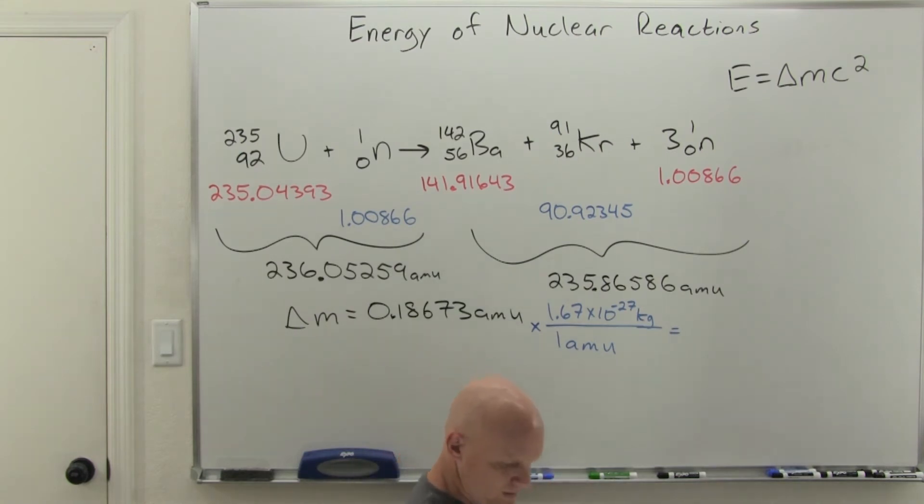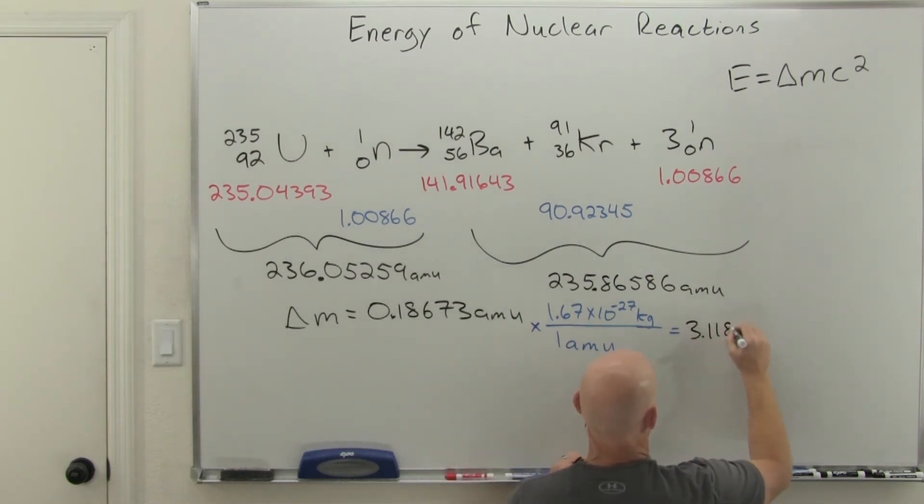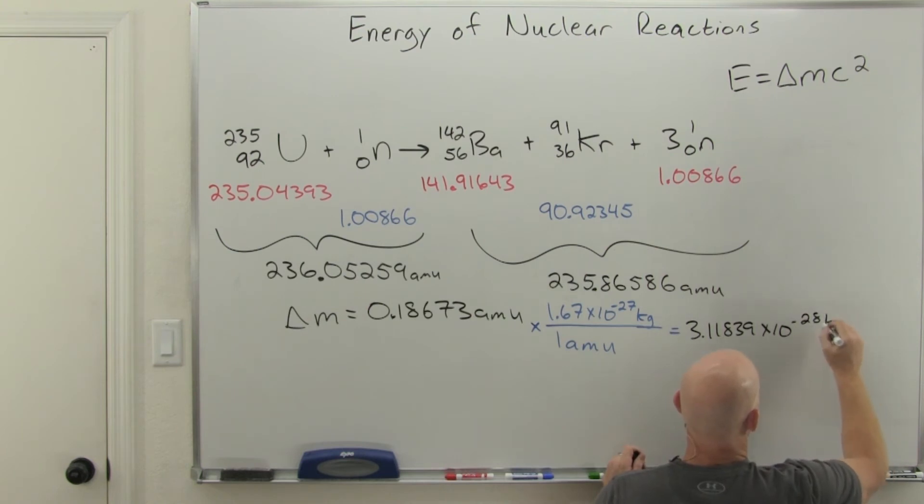We'll keep five decimal places: 3.11839 times 10 to the negative 28 kilograms. That's not going to seem like a very big number, but when we start putting this in context, it'll start seeming a little bigger.